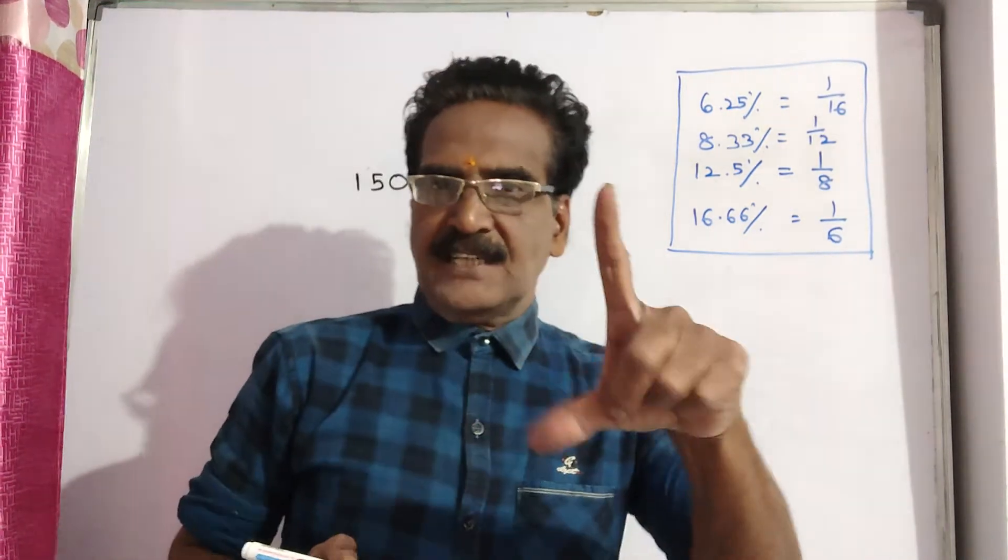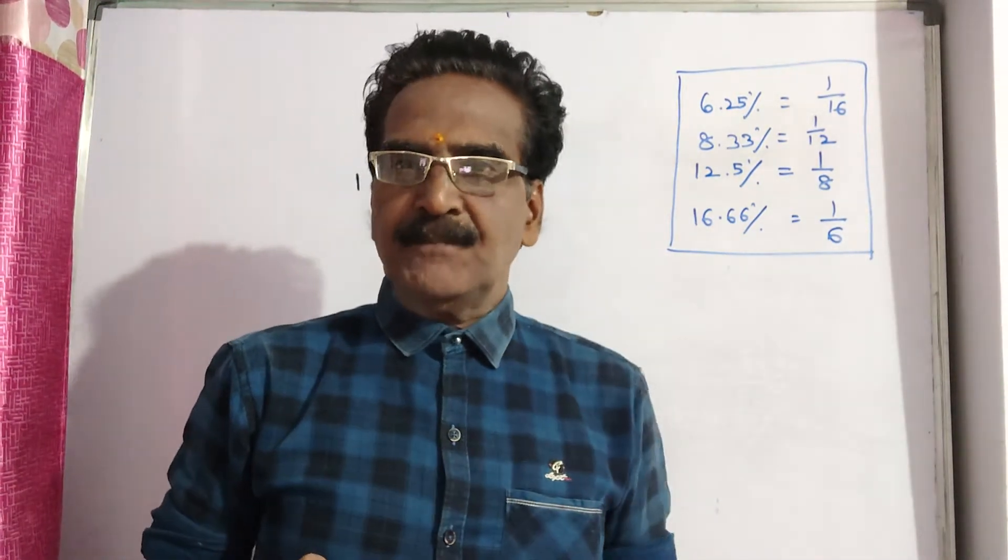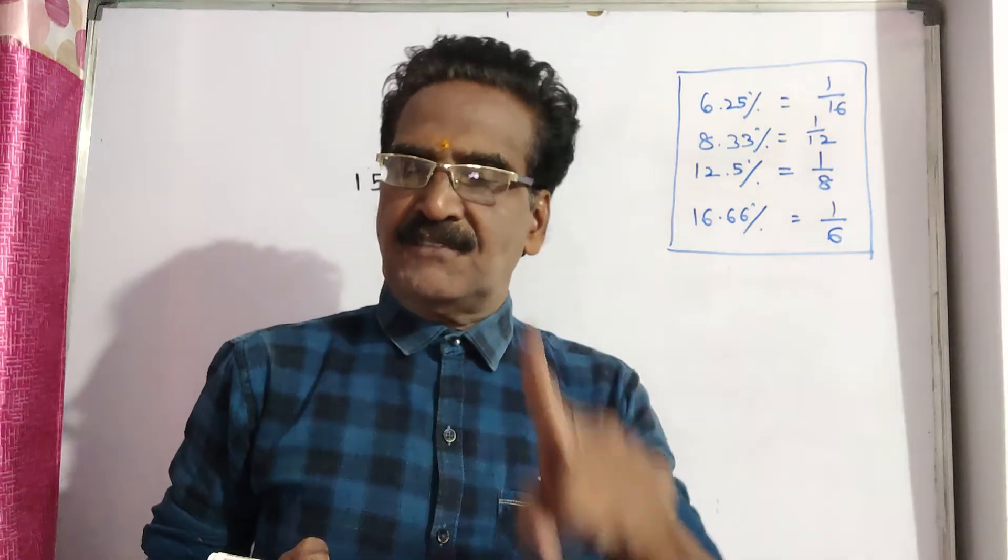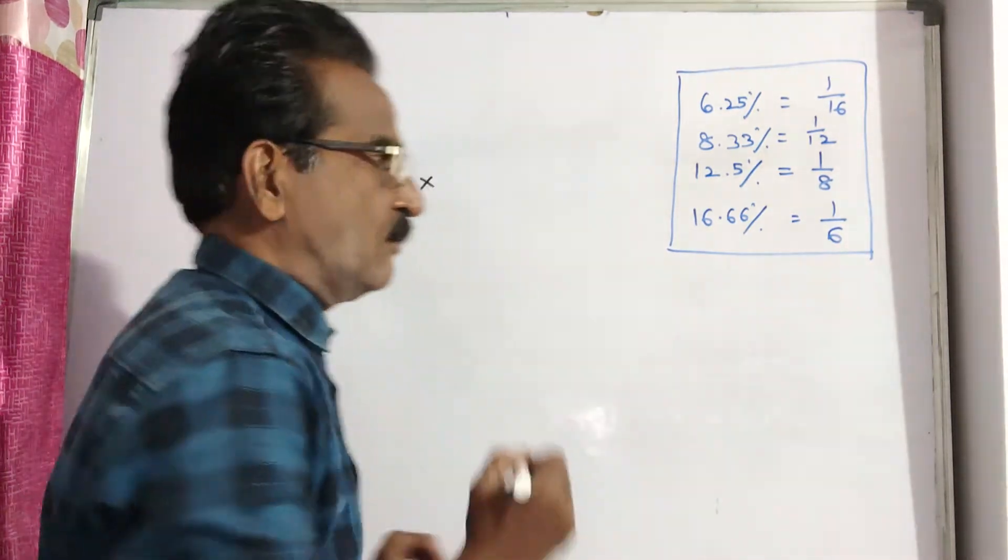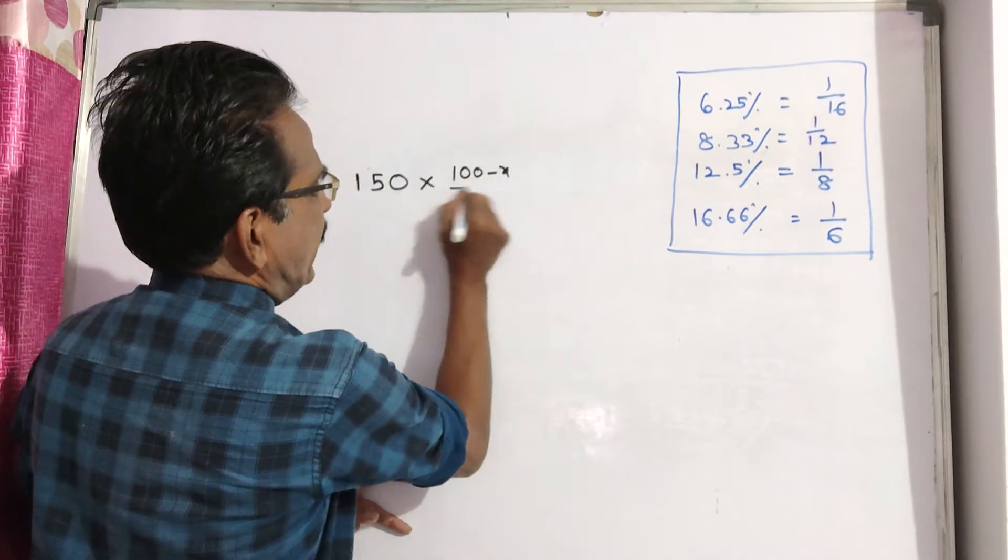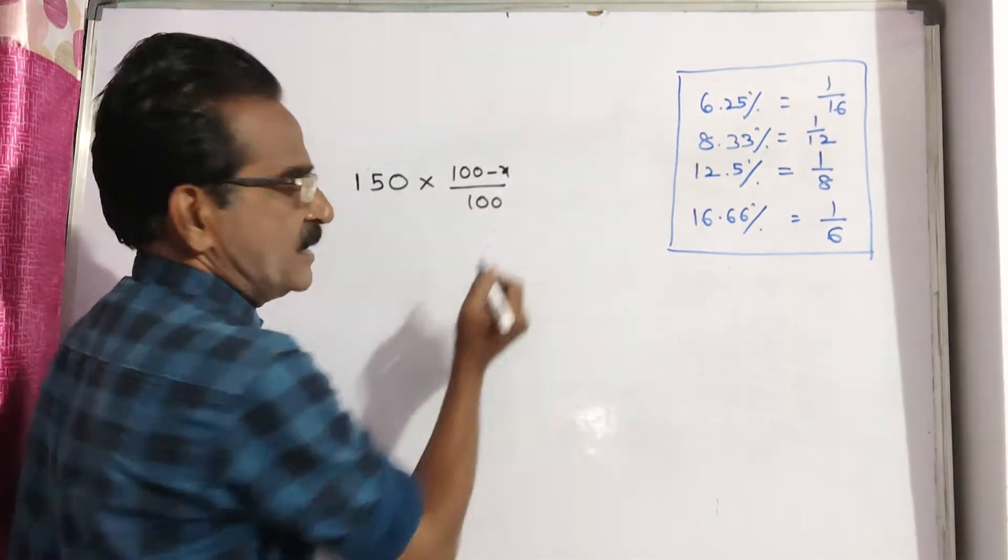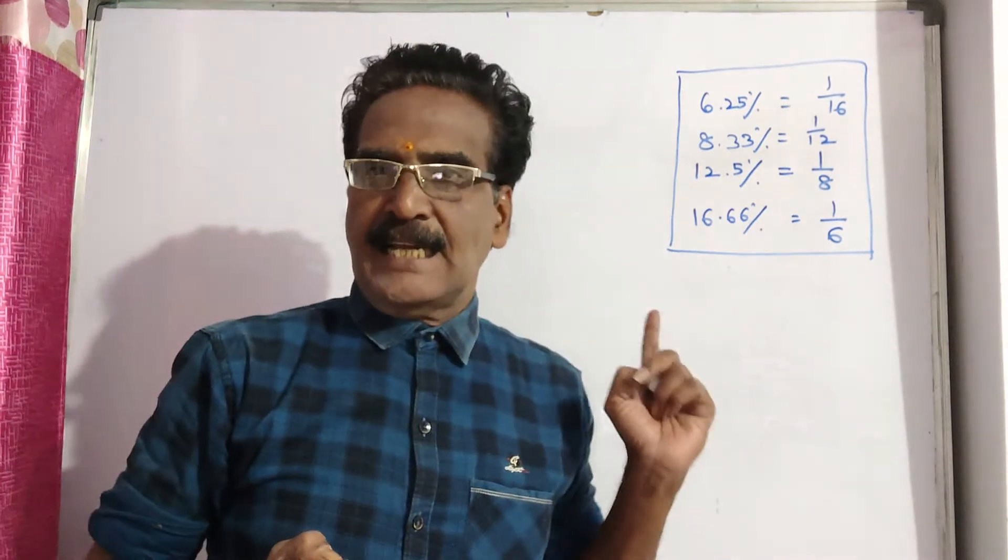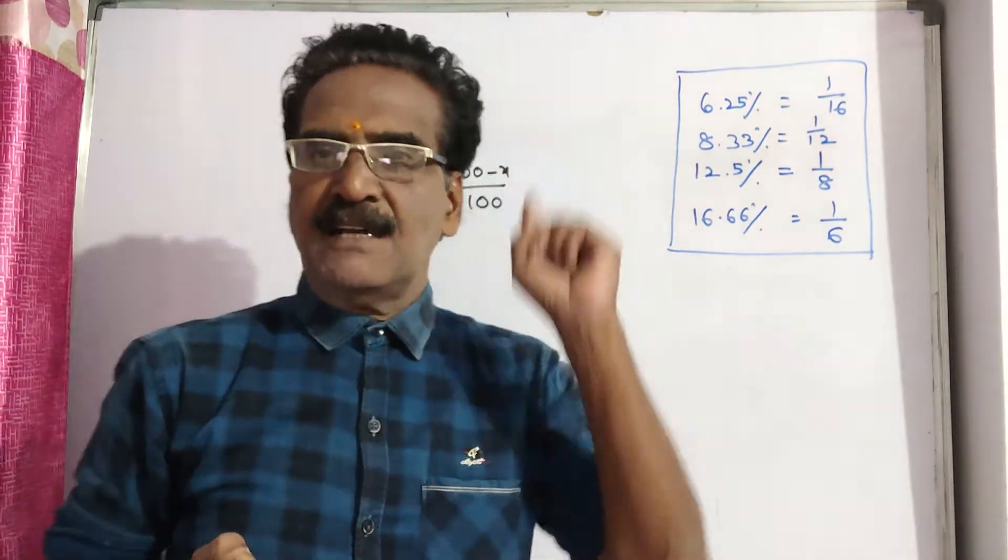Say the first discount X percent, then the selling price of the shirt after first discount will be 150 into 100 minus X by 100. This is the selling price of the shirt after first discount.